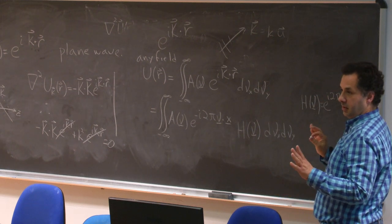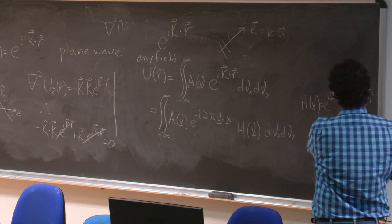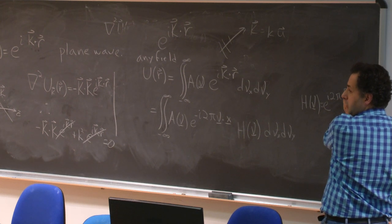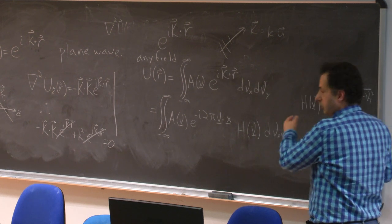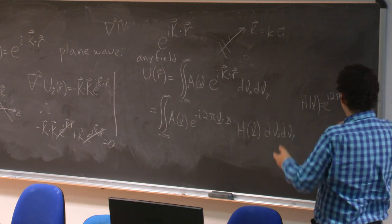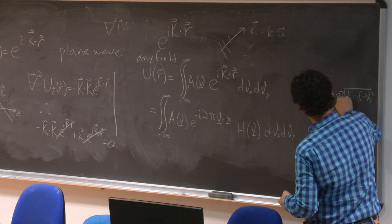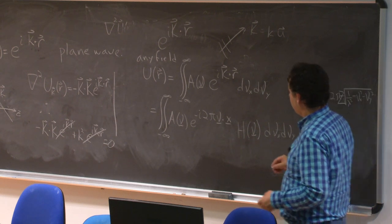So this gives me 1 over lambda squared minus nu x squared minus nu y squared. Is that okay? And it is assumed that when this is bigger than 1, this is positive. When this is smaller than 1, the square root is positive imaginary. So that this whole thing, times z, times c.